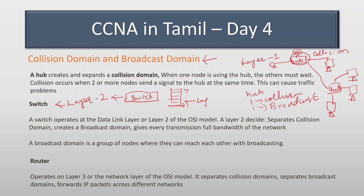Layer 2 is the data link layer of the OSI model. The switch operates at OSI layer 2. However, advanced switches can also process at OSI layer 3, which is the network layer. Next level network layer processing will be handled in advanced switches.